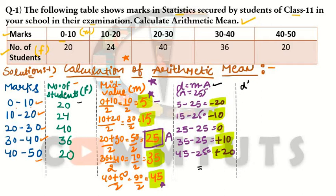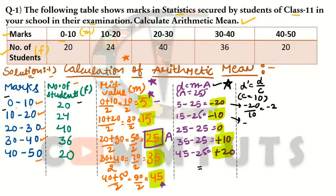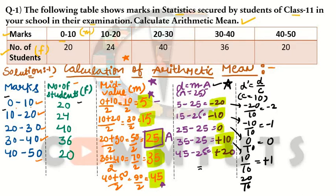I am giving the comparison so there is no confusion in the exam. The common factor c is 10 (the class interval). So now we calculate d' = d ÷ c: −20 ÷ 10 = −2; −10 ÷ 10 = −1; 0 ÷ 10 = 0; 10 ÷ 10 = +1; 20 ÷ 10 = +2. We now have all step deviations d'.